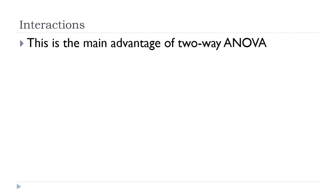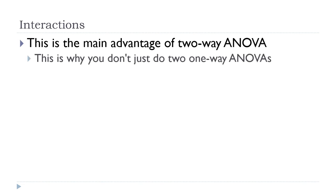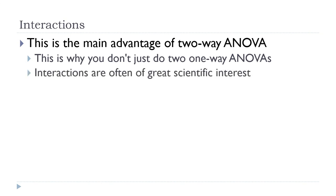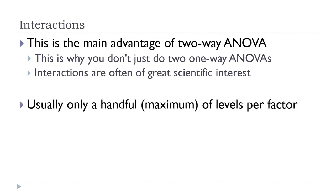Interactions are the big deal. That's why we do a two-way ANOVA instead of two one-way ANOVAs — because we want to know about the interactions. The main effects are essentially the same as if you did two one-way ANOVAs, so we could just do that. But interactions are really cool. And to interpret interactions, we usually keep the number of levels per factor down to about a handful.